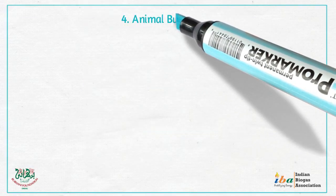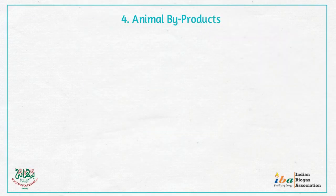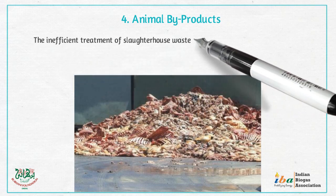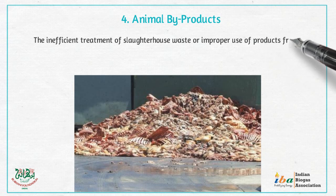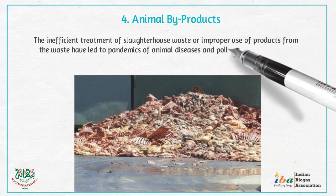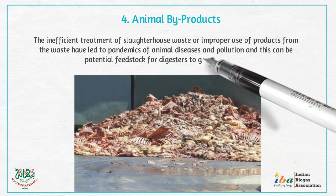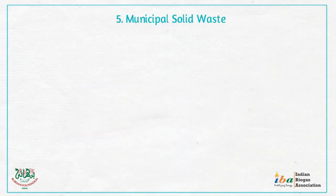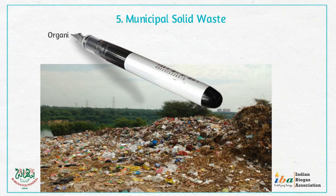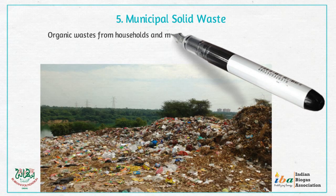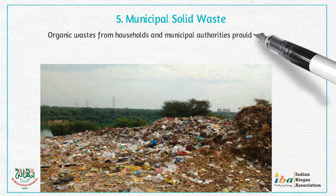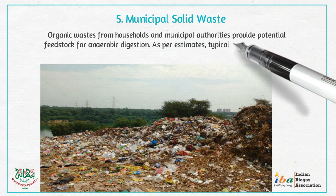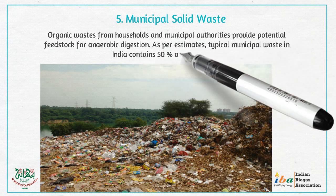4. Animal by-products. The inefficient treatment of slaughterhouse waste or improper use of products from the waste have led to pandemics of animal diseases and pollution, and this can be a potential feedstock for digesters to generate biogas. 5. Municipal solid waste. Organic wastes from households and municipal authorities provide potential feedstock for anaerobic digestion. As per estimates, typical municipal waste in India contains 50% organic matter.